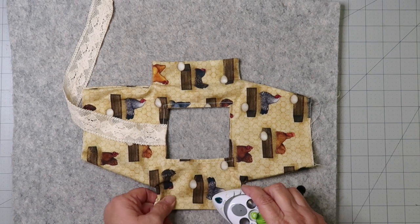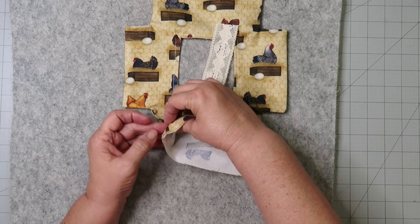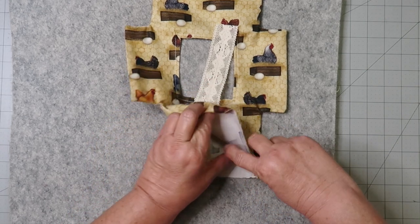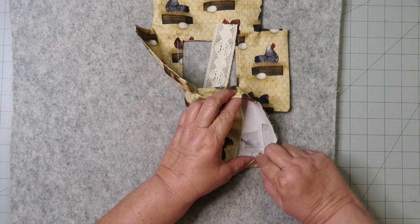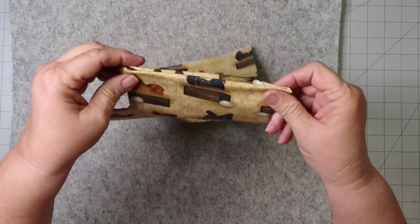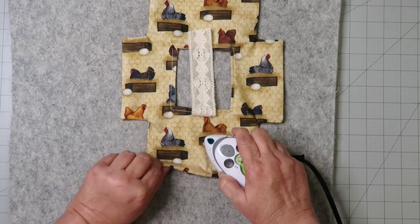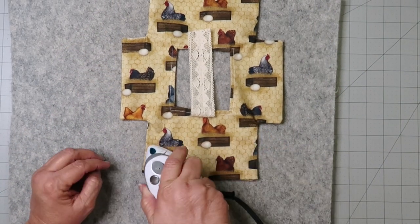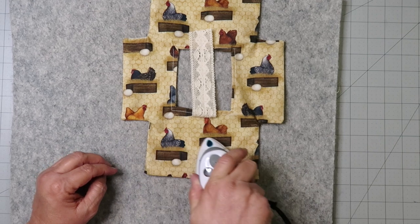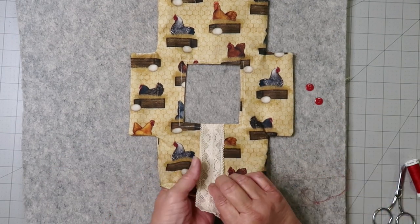Now we're going to iron and then turn in where the skirt's going to be inserted, one half of an inch, and iron. Now it's time to attach the buttons.